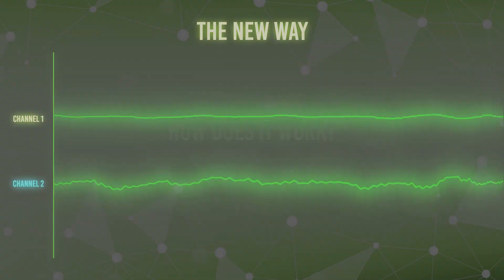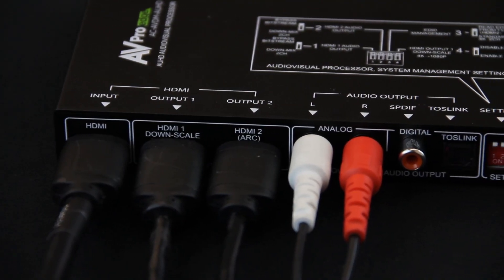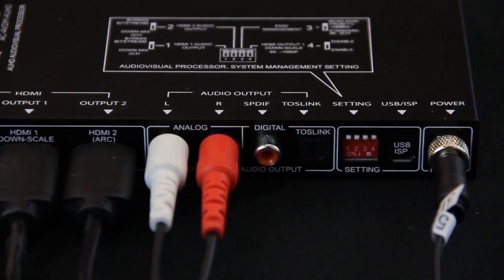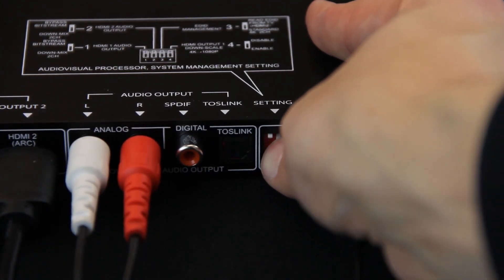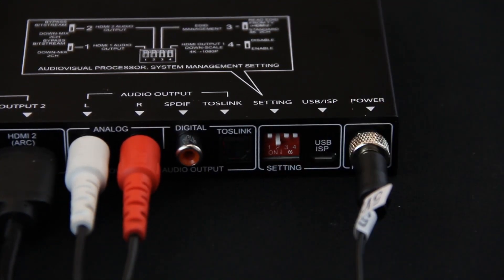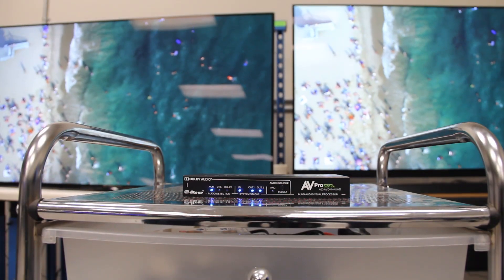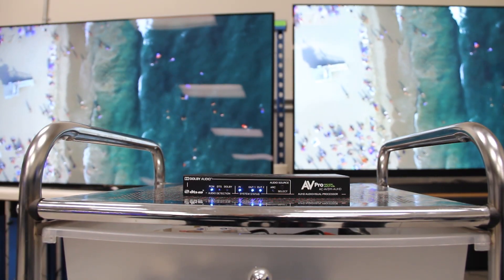This downmixer was engineered to handle 18 gigabit per second video alongside whatever audio you are distributing. With its HDMI input and two HDMI output ports, you are able to connect a source into the AVDM with bitstream audio, then pass that HDMI signal through the HDMI output ports with the bitstream audio still intact.